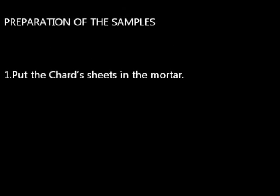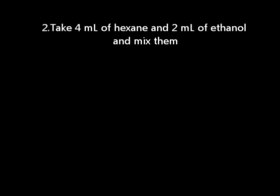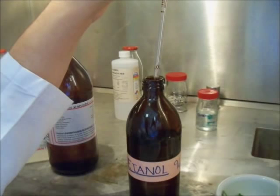First, put the chard sheets in the mortar. Take 4 ml of hexane and 2 ml of ethanol and mix them.